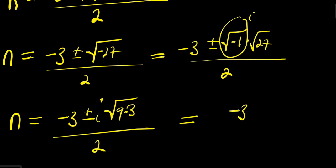This equals -3 plus or minus i×√9×√3, divided by 2.